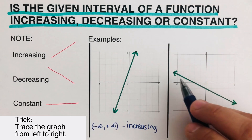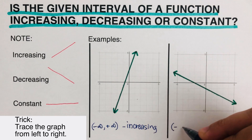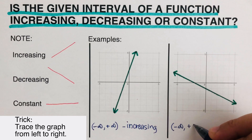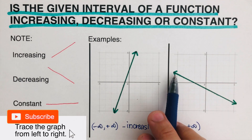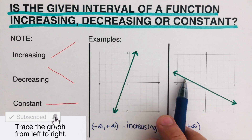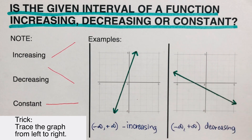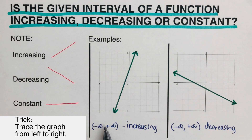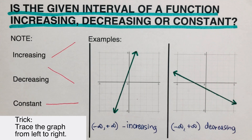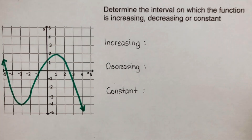We start from negative infinity to positive infinity, trace the graph from left to right, and it's going downhill, so this function is decreasing at this interval. Remember: the parentheses notation we're using here is not an ordered pair — others might think it is, but it is not an ordered pair.